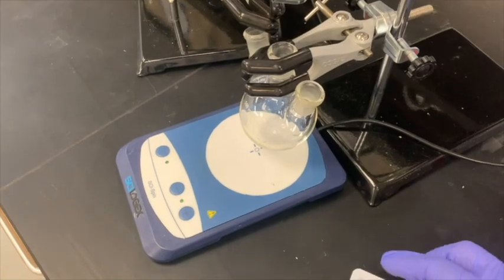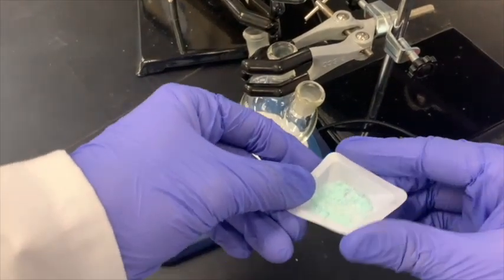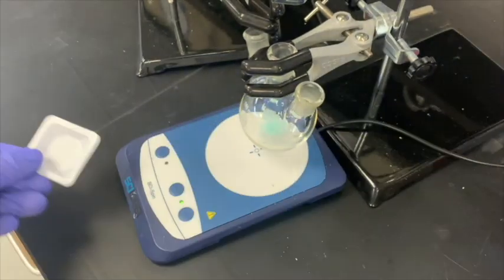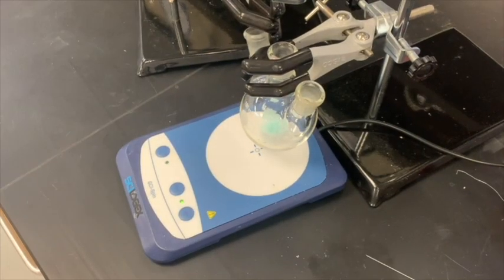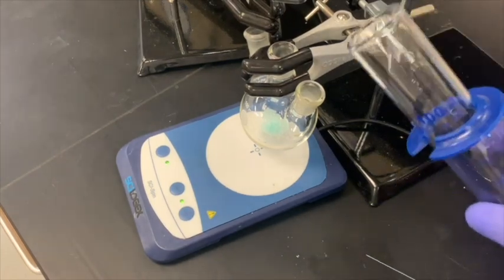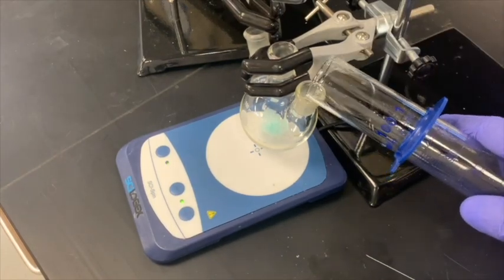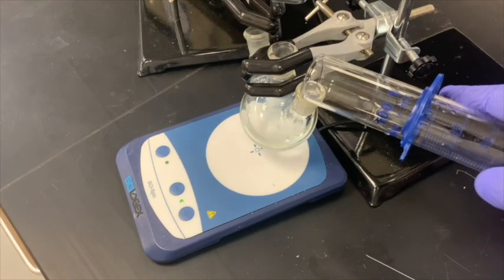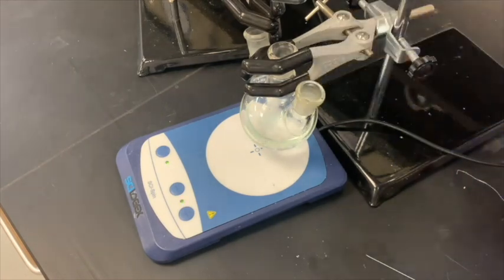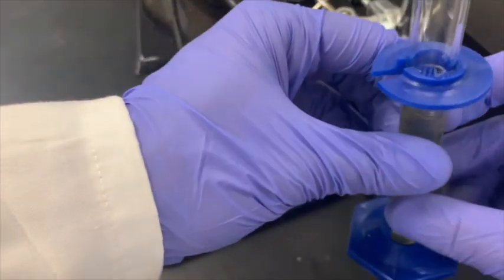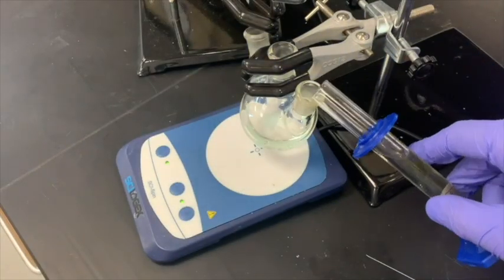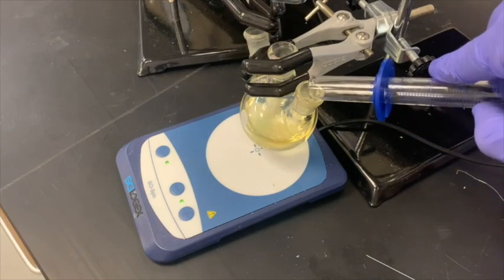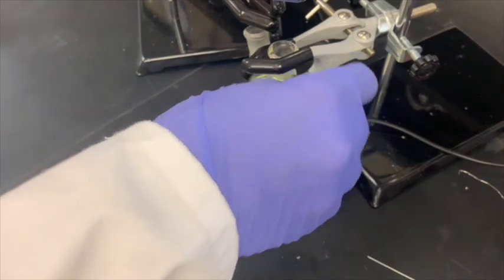This solid can be taken over to the round-bottom flask and poured directly in. Next, we will add 40 milliliters of deionized water measured out in a graduated cylinder, followed immediately by 10 milliliters of our supernatant solution, also measured out in a graduated cylinder. Once we've added these two solutions, you can also add a stir bar.